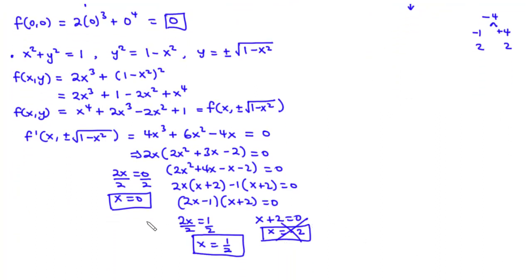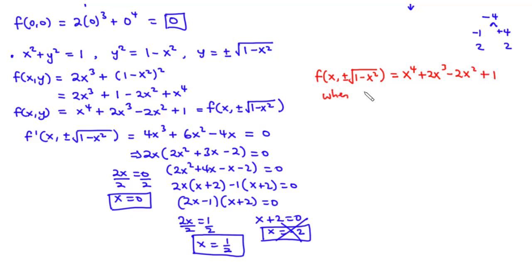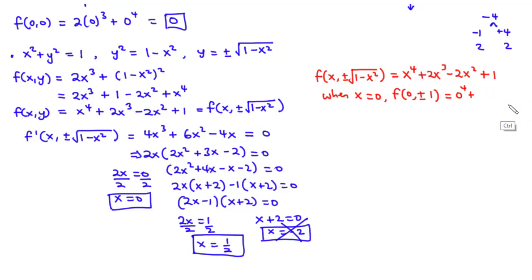Using the function f(x, ±√(1−x²)) = x⁴ + 2x³ − 2x² + 1, when x = 0: f(0, ±√(1−0)) = 0 to the power 4 plus 2 times 0 cubed minus 2 times 0 squared plus 1, which equals 1.